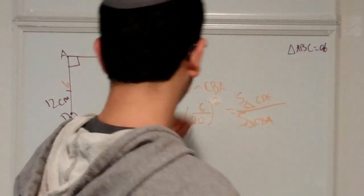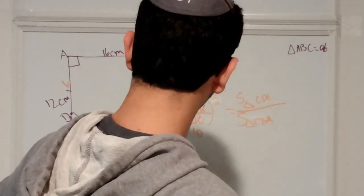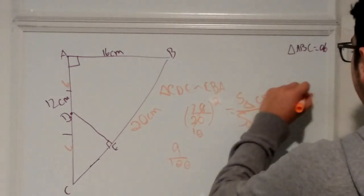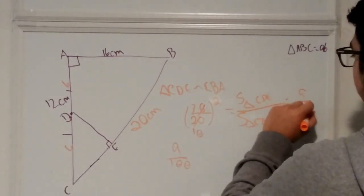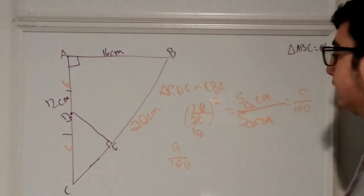That right there, 3 over 10, that's going to be equal to 9 over 100, is equal to the area of that triangle over the area of that triangle.